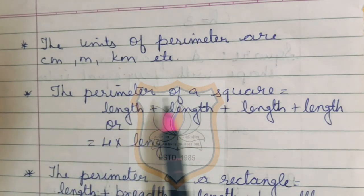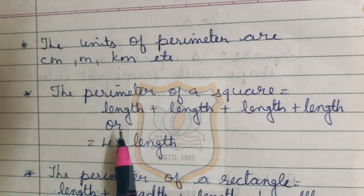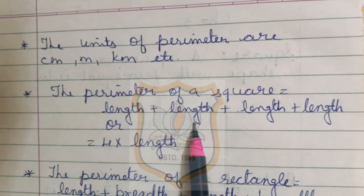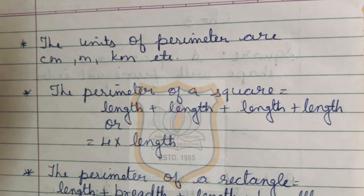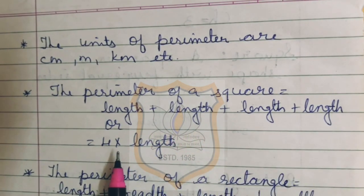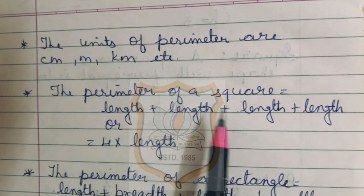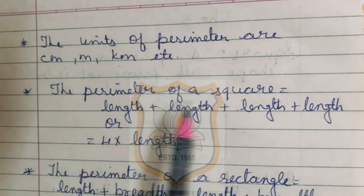The perimeter of a square. To find out the perimeter of a square, we have to follow the formula: length plus length plus length plus length. As you know, the length of a square is the same on all its 4 sides. So we can add all 4 sides of length, or we can multiply the length by 4. You can use either method to find out the perimeter of a square.